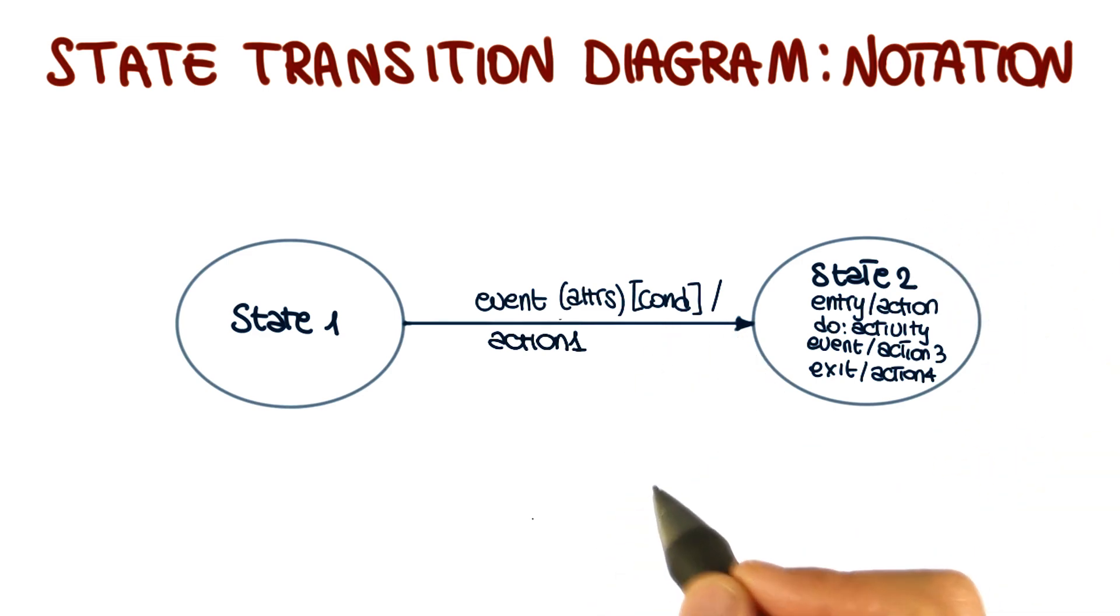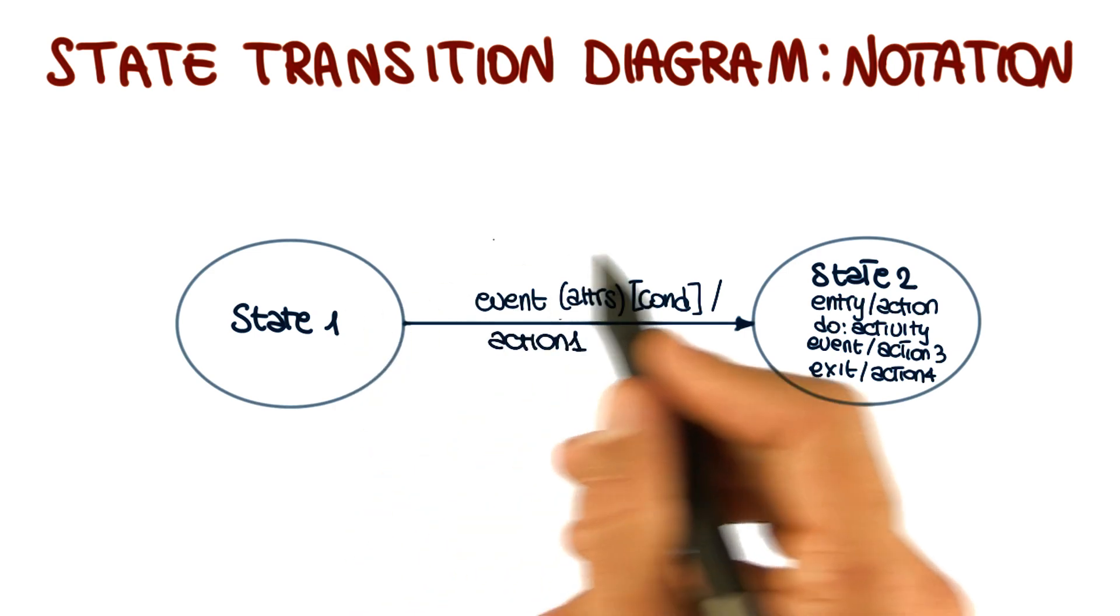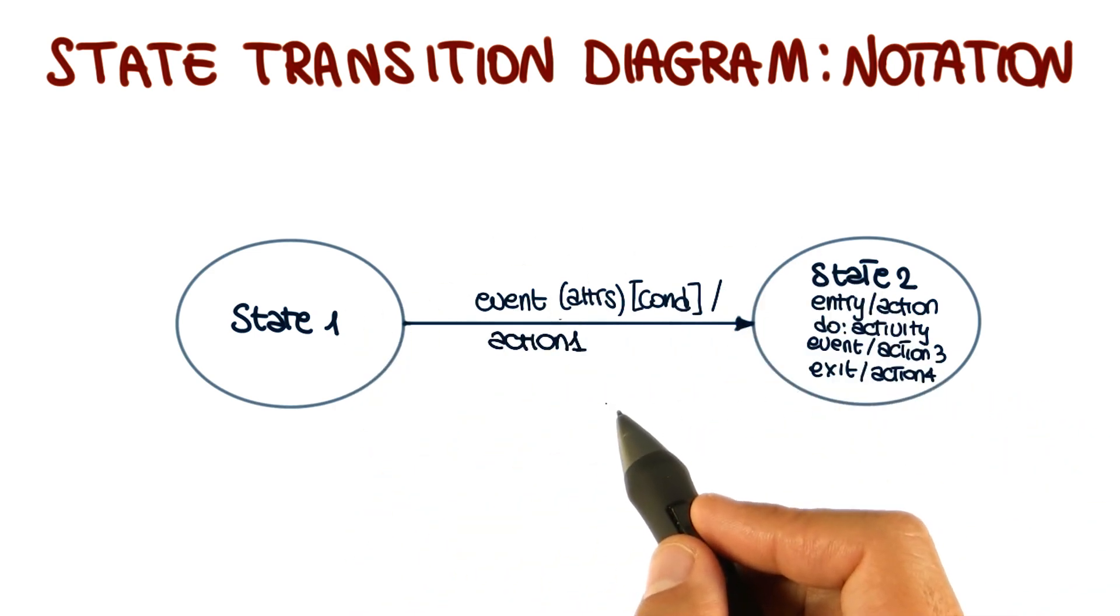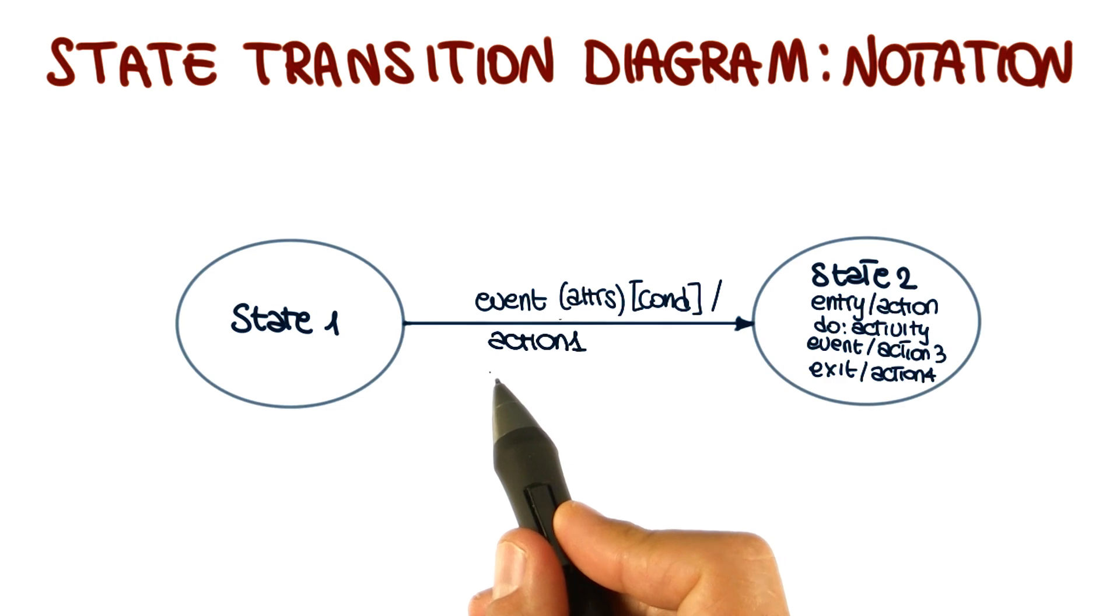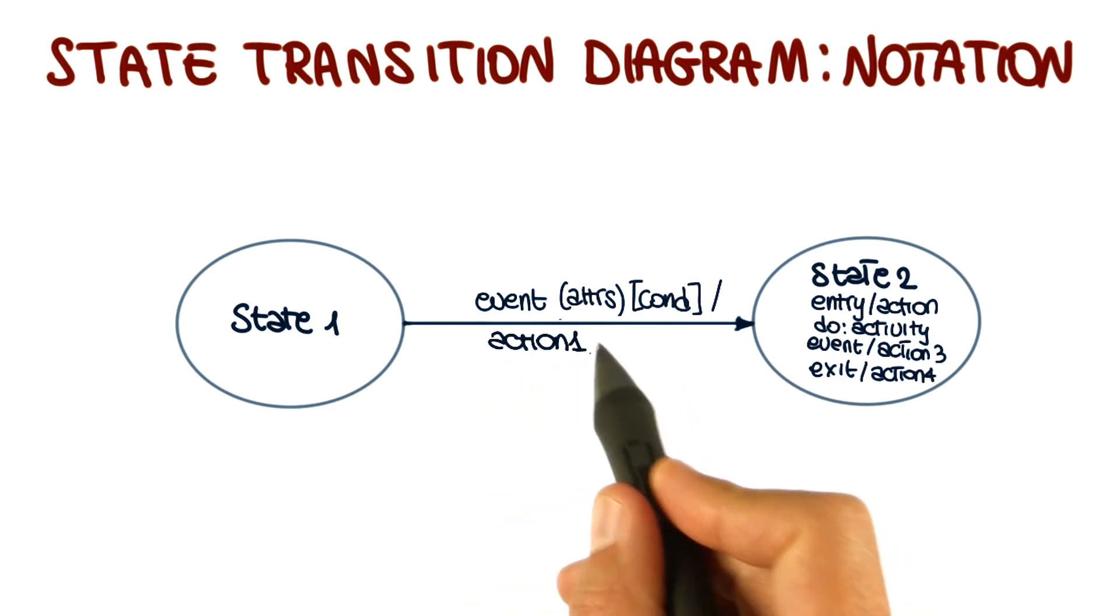Since we have several actions and activities, it is probably worth clarifying the ordering of such actions and activities. So the way in which these actions and activities occur is, first of all, we have the actions on the incoming transition.